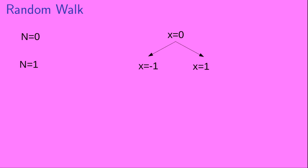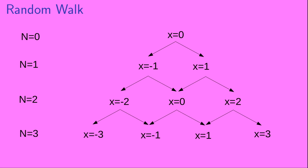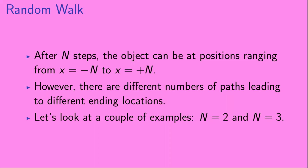The object starts at x equals zero. After one step, it can be at either x equals minus one or x equals one. After two steps, it can be at x equals minus two, x equals zero, or x equals two. And after three steps, it can be at x equals minus three, x equals minus one, x equals one, or x equals three. So after n steps, the object can be at positions ranging from x equals minus n to x equals plus n. Let's look at a couple of examples: n equals two and n equals three.